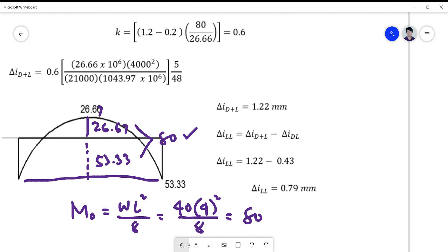So this is parenthesis here, so that's also 0.6 there. We just plug it here: 0.6 M, the total load, L squared, EC I. So you get 1.22, and subtracting you will get 0.79.